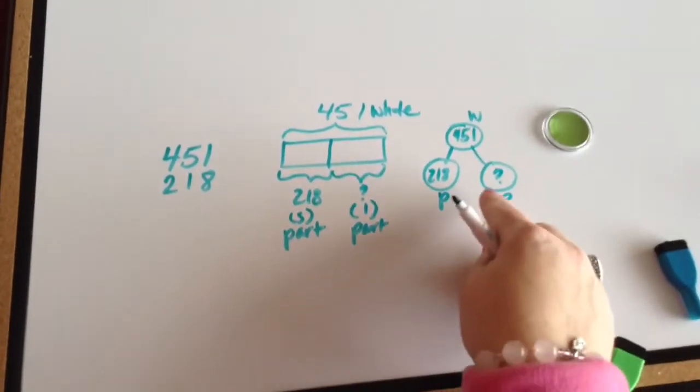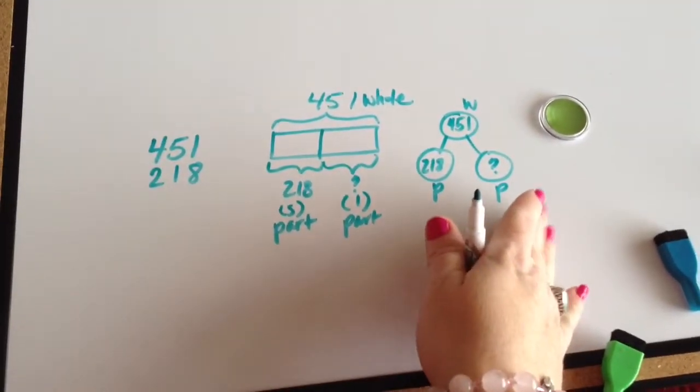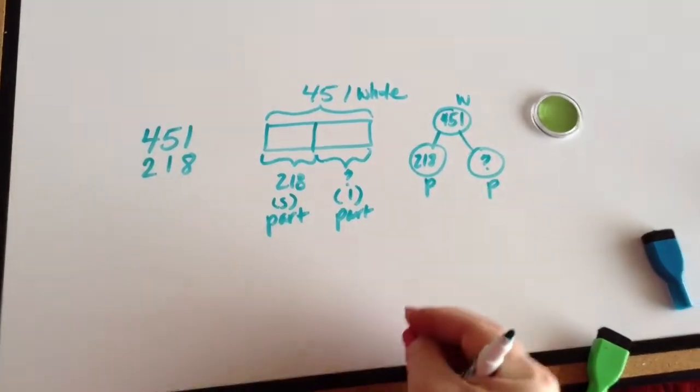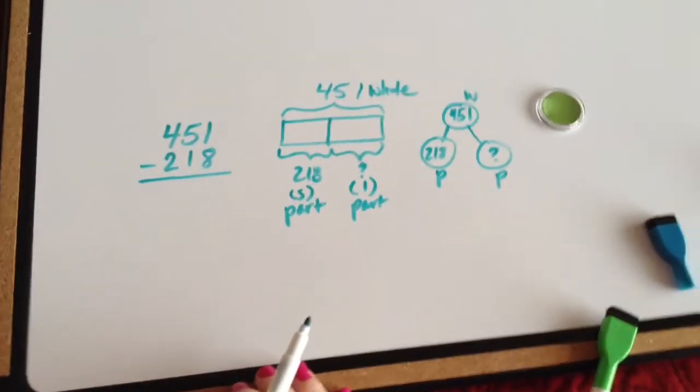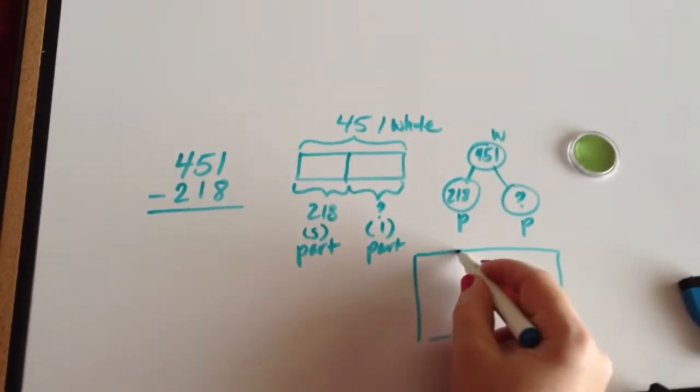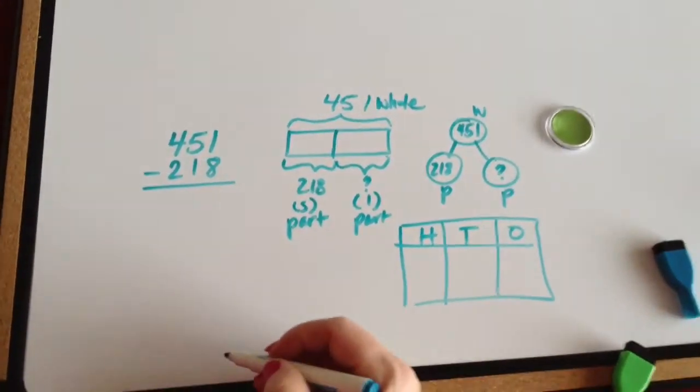Let's find that part by taking away. If we take this part away, we could find our whole. So now we know we're subtracting, we're taking away. And we'll start off with drawing our place value chart: ones, tens, hundreds.